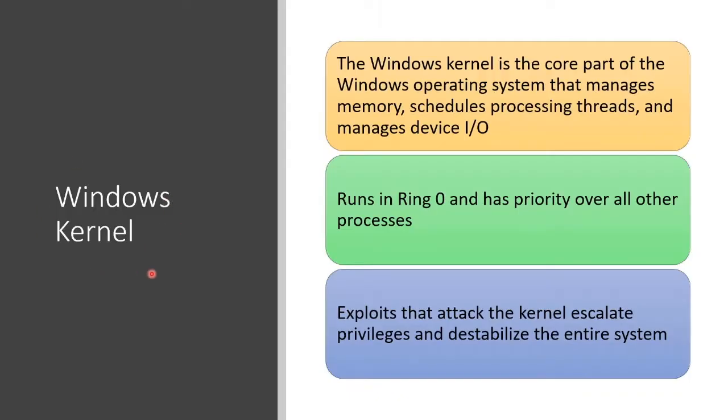Let's talk about the Windows kernel — the core part of the operating system. It manages memory, schedules processing threads, and manages device input-output. It runs in what we call Ring Zero privilege level and has priority over all other processes. There are rings of privilege enforced on a CPU. In an Intel CPU, there are four privilege levels enforced at the hardware level. Ring Zero is the most highly privileged part of execution on the CPU, and the core part of the operating system goes there.